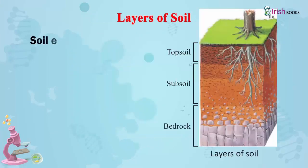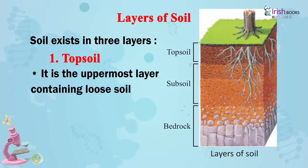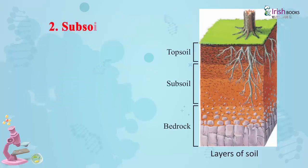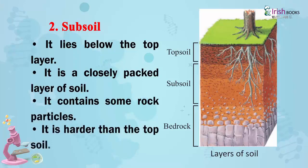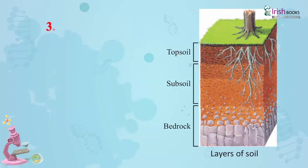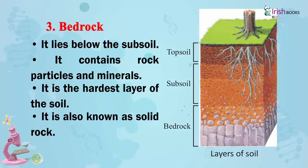Layers of soil. Soil exists in three layers. Topsoil is the uppermost layer containing loose soil; plants grow in it. Subsoil lies below the top layer; it is a closely packed layer of soil, contains some rock particles, and is harder than the topsoil. Bedrock lies below the subsoil. It is the hardest layer of the soil and contains rock particles and minerals. It is also known as solid rock.